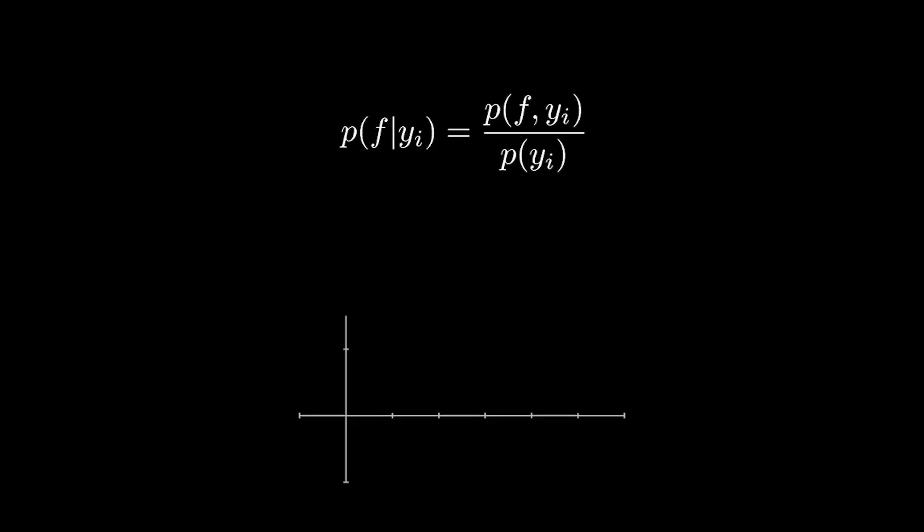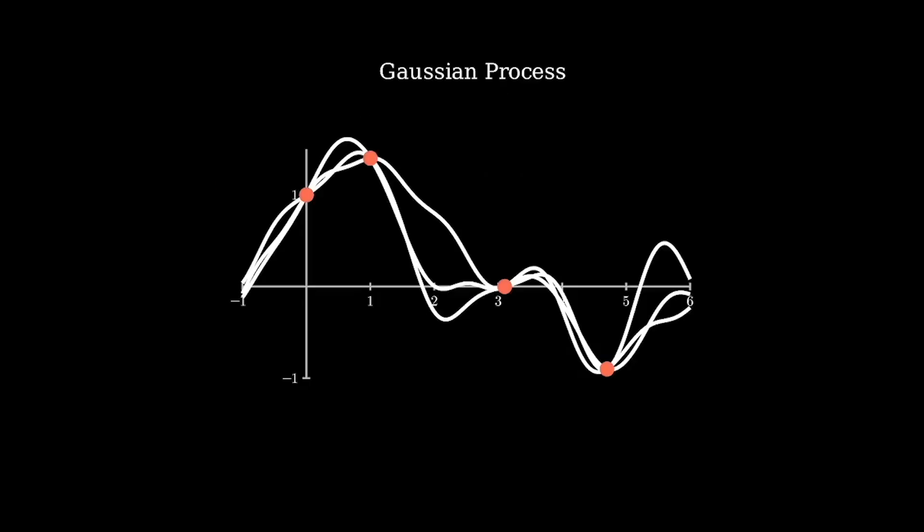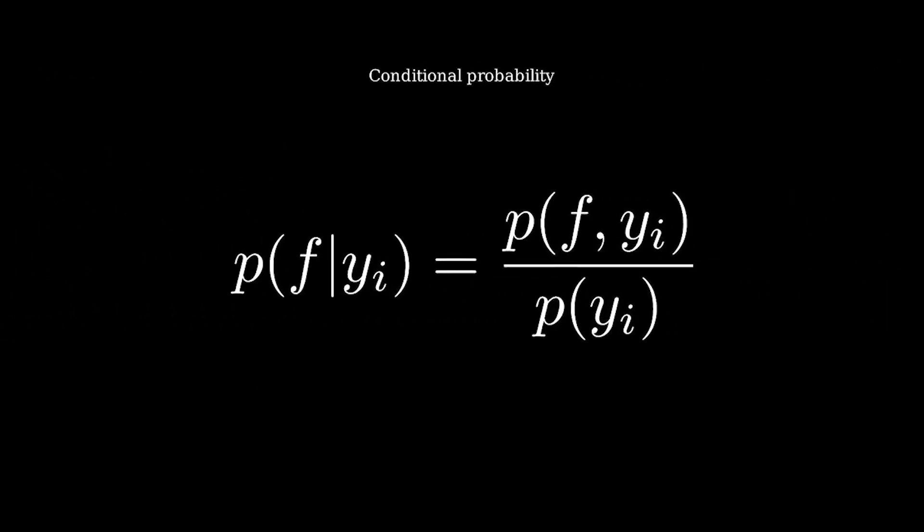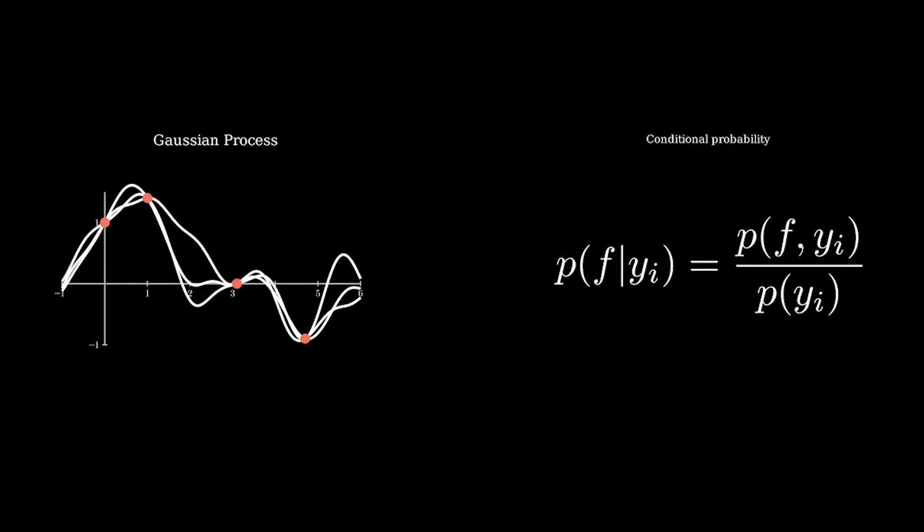So, now we have two parts. We have the probability distribution over functions given by Gaussian processes and we have a formula to adapt the distribution to new points accordingly. We can combine those to derive an algorithm which calculates and adapts our distribution iteratively to the points we observe.